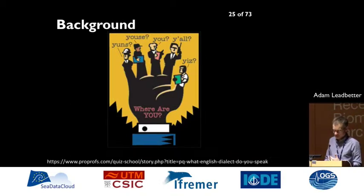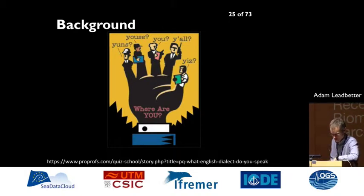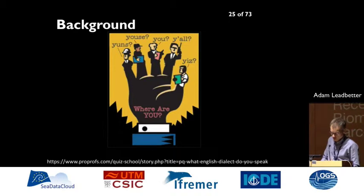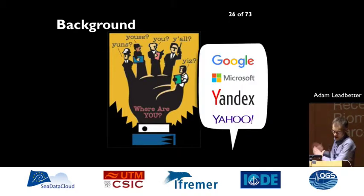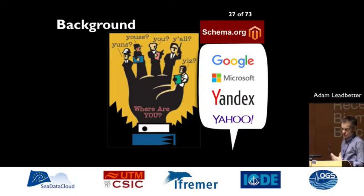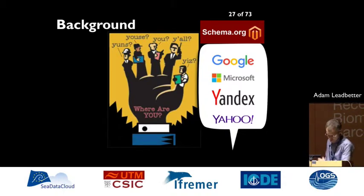In terms of linked data, there are all kinds of different dialects, just as in any language. The reason we're looking at schema.org as a way of dealing with this is that it's a dialect that various tools can understand. The companies that have been driving the development of schema.org as a dialect for structured data are the main search engines — Google, Microsoft, Yandex, Yahoo. They all understand this dialect of schema.org, they can take the information and do things with it, as we've just seen in those examples.